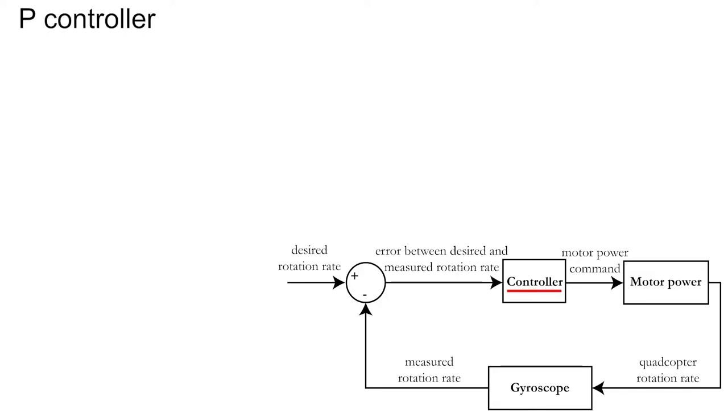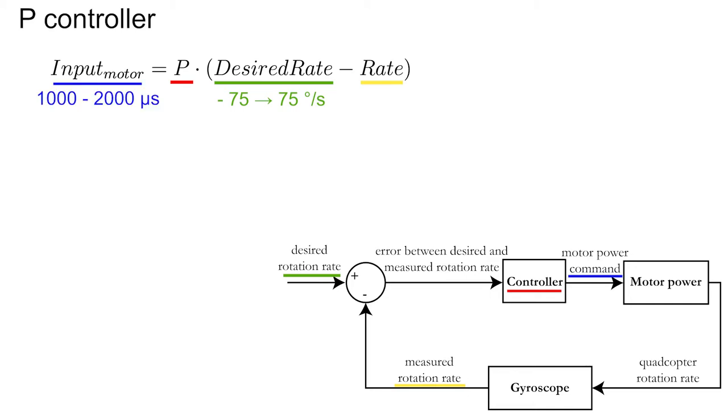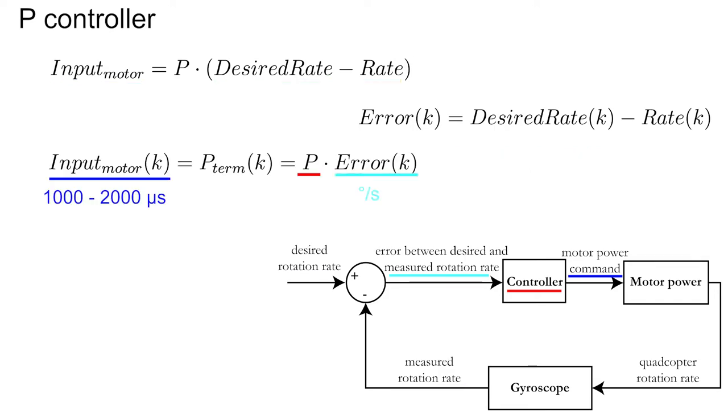Now suppose that the controller just consists of the difference between the desired and the measured rotation rate, multiplied with a constant P. Remember that the desired rotation rate changes between plus and minus 75 degrees per second and the motor input command between 1000 and 2000 microseconds. You can simplify this equation by introducing the error variable. Import as well the iteration number k, which is increased by 1 when you start a new iteration. This results in a very simple equation where the constant P gives a relation between the error and the motor input.